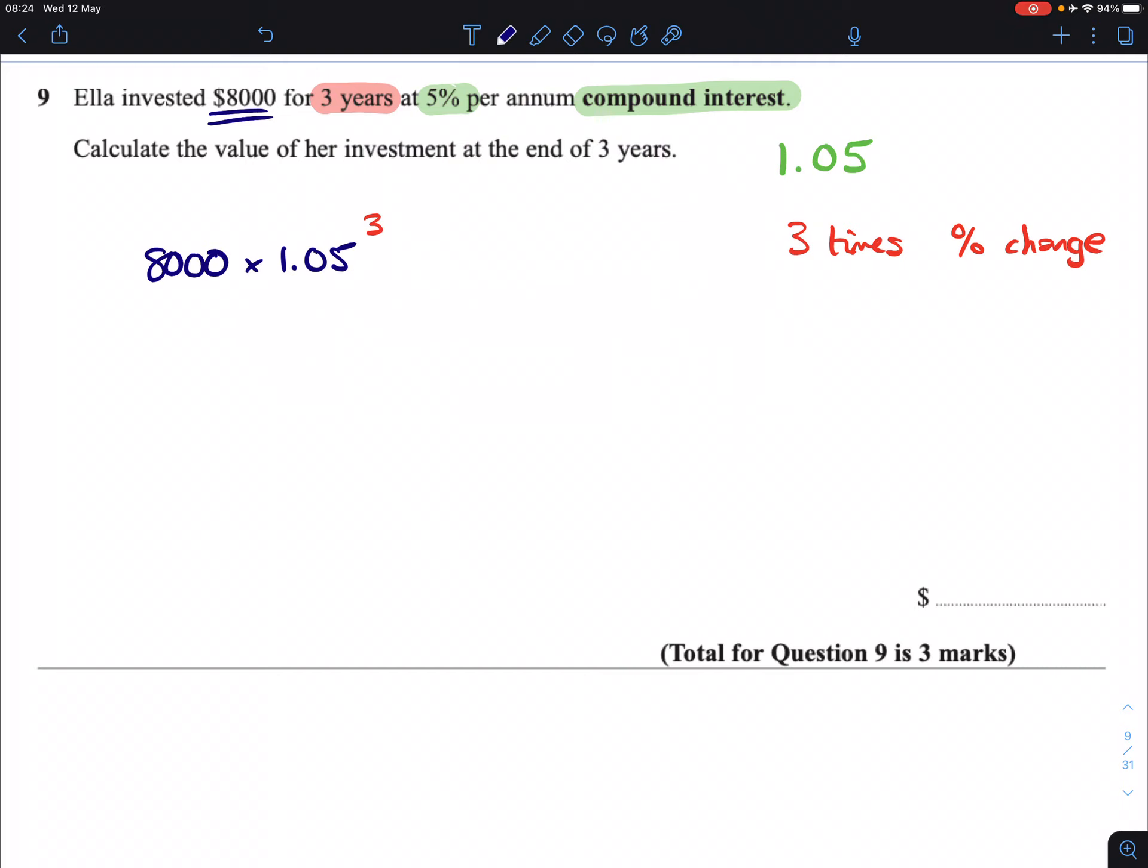But what I've wrote there is technically the least amount that you need to write in order to get the marks here. 9,261 is what your calculator is going to give you. And that's it. Done.